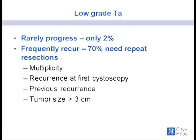When we're talking about low-grade or TA disease, these lesions rarely progress but they're very bothersome in the sense that they frequently recur. 70% of patients with low-grade TA disease will ultimately require another resection. Factors influencing recurrence include multiple lesions, recurrence at the first surveillance cystoscopy, prior recurrence history, and tumor size greater than three centimeters.